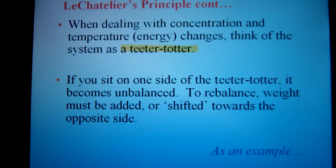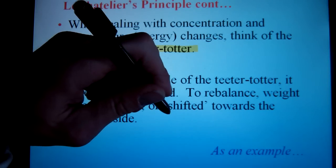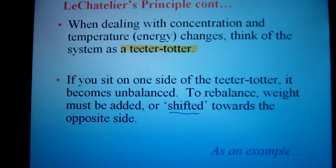When we apply a stress to an equilibrium system, we need to predict which way the system is going to shift towards. Essentially, if I add a reactant, then I'm going to want to get rid of the reactant, which means I would shift to the products. If I add a product, I want to get rid of the product, thereby shift to the reactant.